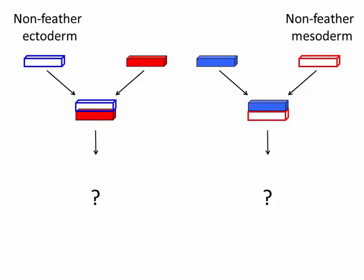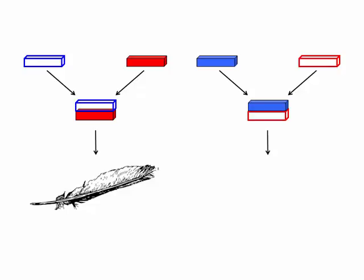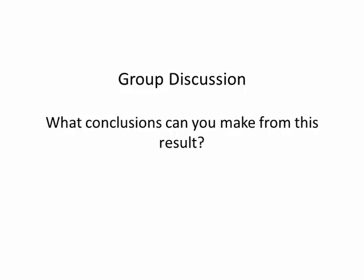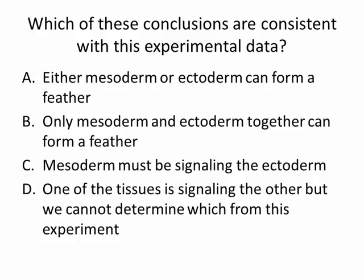In our next experiment, ectoderm and mesoderm are again combined, but this time one of the tissues is not from a feather-forming region — the ectoderm in one recombinant and the mesoderm in the other. Only when the mesoderm is from a feather-forming region does a feather form. Work in small groups: what conclusions can you make from this result? Then answer this clicker question.